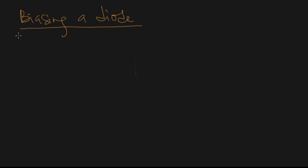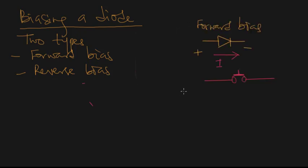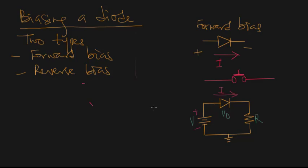Now we come to biasing of a diode. There are two types: forward bias and reverse bias. When we talk about forward biasing, the diode is a two-terminal device with a positive terminal and a negative terminal. We connect the positive terminal of the battery to the positive terminal of the diode, and the negative terminal to the negative terminal. This is analogous to a closed switch, and in this configuration the diode allows the flow of current to the resistor — so we say the diode is forward biased.